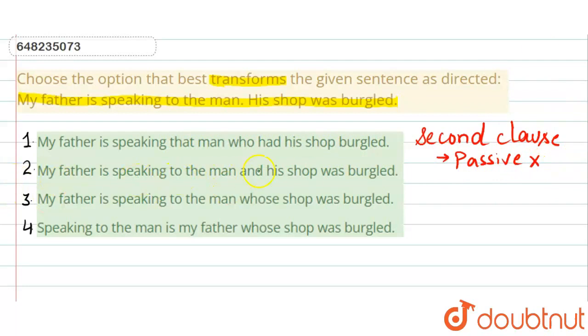Then second, we will see: My father is speaking to the man and his shop was burgled. Look, we have used here 'and'. Okay? We have not used here, we have to use a relative pronoun. What do we have to use? We have to use a relative pronoun. So this is why second is not our answer.